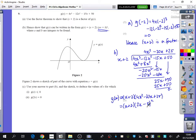This is then where it shows us the graph, and it says that figure 2 shows a sketch of part of the curve with equation y equals g of x. Use your answer to part b and the sketch to deduce the value of x for which g of x is less than or equal to 0. The word deduce means to work out, or just use the information you have to work it out. So which parts of the graph here are less than 0?